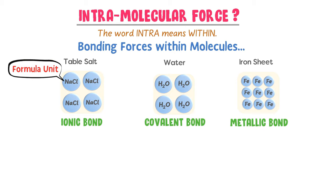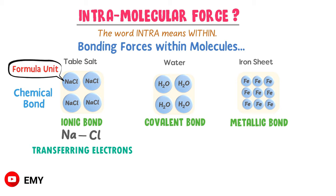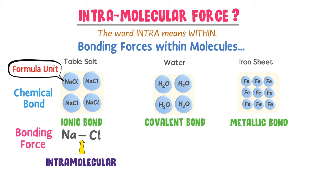The smallest unit of ionic compounds is a formula unit, like NaCl. There are two atoms — sodium and chlorine — in a single formula unit of salt. These atoms form a chemical bond by transferring electrons. Sodium atom is chemically bonded to chlorine atom due to ionic bond. So the bonding force within the formula unit of sodium chloride is called an intramolecular force.